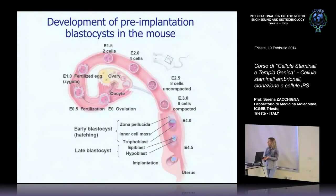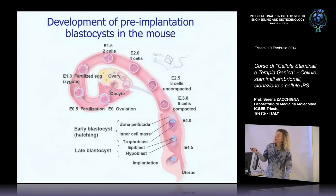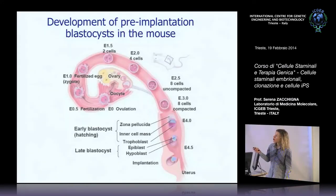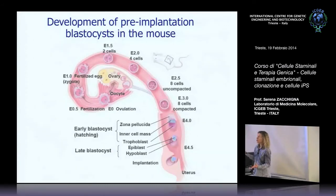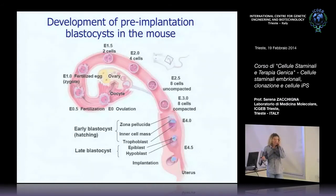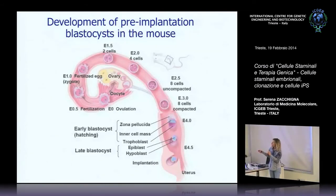Il processo di differenziamento inizia molto presto. Questo diagramma illustra quello che succede in una tuba quando l'ovocita incontra lo spermatozoo: si viene a formare lo zigote, la vera cellula staminale totipotente, che poi inizia a dividersi — due cellule, quattro cellule. Quello che si impianta nell'utero è già qualcosa di molto differenziato: è la blastocisti, nella quale si riconoscono fondamentalmente due porzioni. Una parte chiamata trofoblasto, che darà origine alla placenta, e la massa cellulare interna, che darà origine all'embrione.